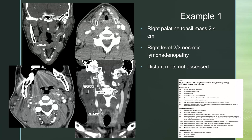Example one: we have a mass involving the right palatine tonsil measuring 2.4 centimeters in maximum craniocaudal dimension. In the area of the usual suspects, we have necrotic right level two and three lymphadenopathy, though each lymph node is less than three centimeters, and distant metastases are not assessed on this CT scan. So our final staging is T2N2BMX.